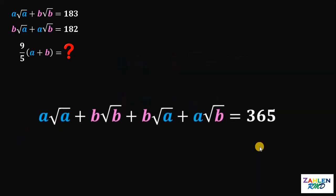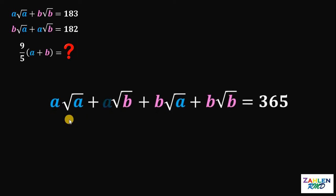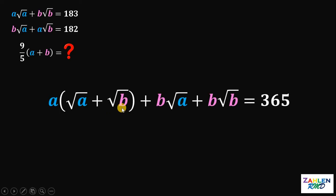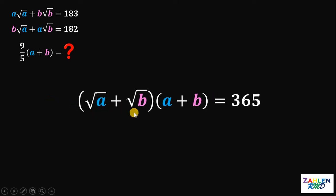Now let's focus on this sum. Notice that we have A outside the radical sign and B outside the radical sign. We rearrange the left-hand side so that terms with A and terms with B are grouped together: A times square root of A plus A times square root of B, plus B times square root of A plus B times square root of B. From the first two terms we can factor out A, giving A multiplied by (square root of A plus square root of B). From the last two terms we factor out B, giving B multiplied by (square root of A plus square root of B). We now have a common factor, so we factor out (square root of A plus square root of B), yielding (square root of A plus square root of B) times (A plus B) equals 365.